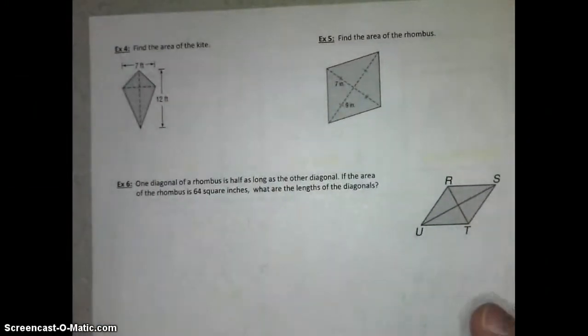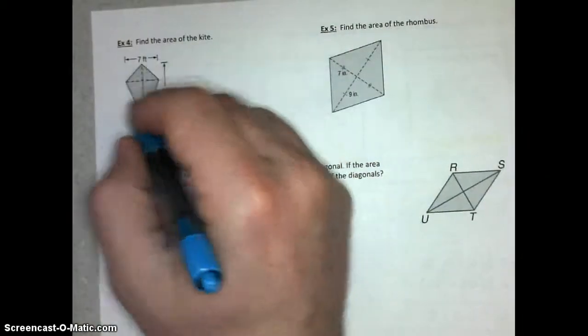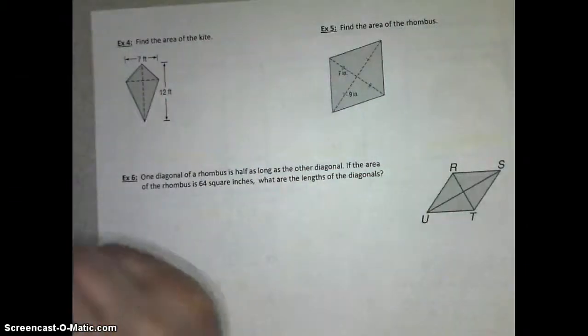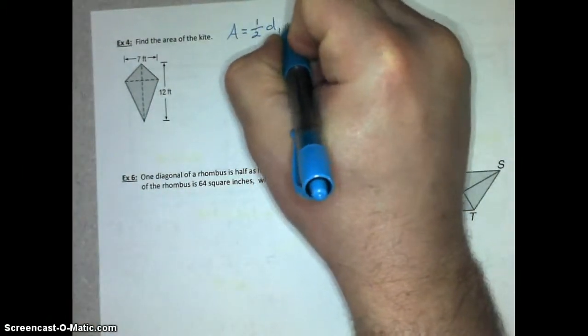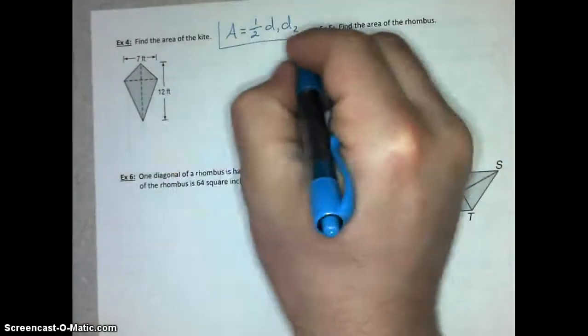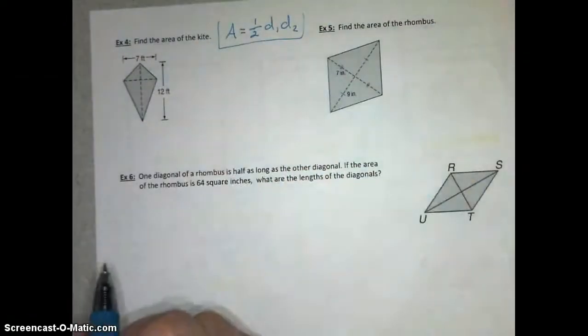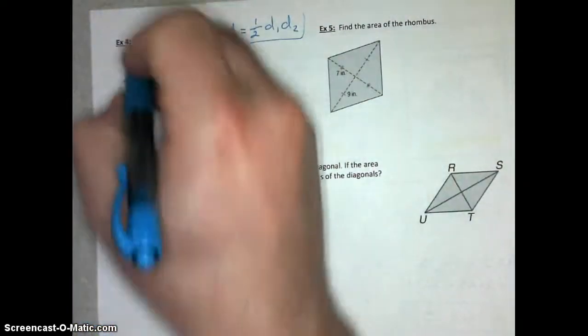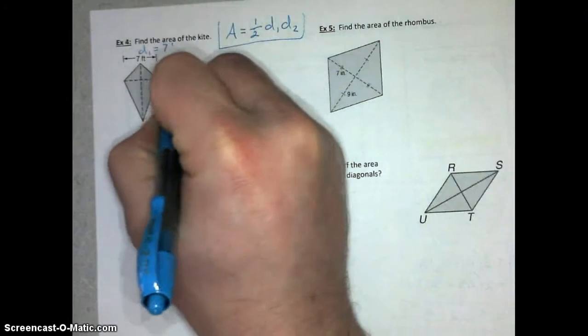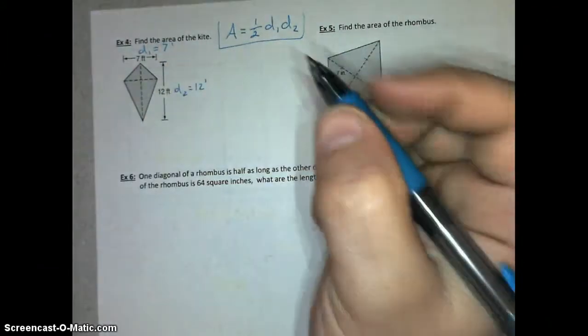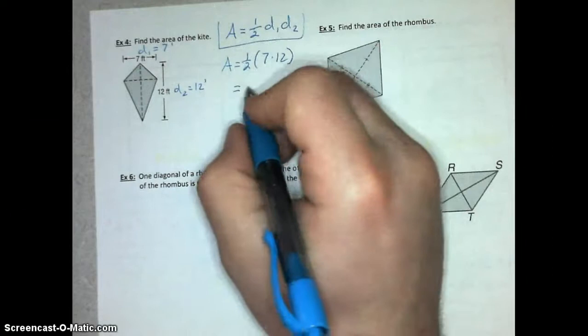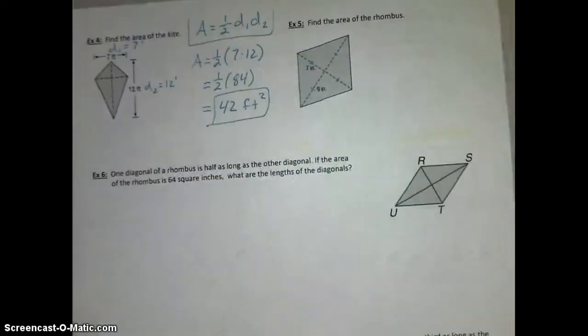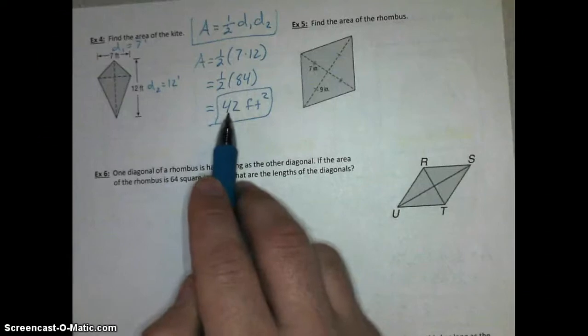Now we can move on to talking about kites and rhombi. We have a kite where one diagonal measures 12 feet and the other diagonal measures 7 feet. Remember that our formula for the area of kites and rhombi is 1 half the product of the diagonals, diagonal 1 times diagonal 2. Our diagonal 1 equals 7 feet, diagonal 2 equals 12 feet. So we can just plug those in. Area is 1 half of 7 times 12. That gives you half of 84, which is 42 square feet.